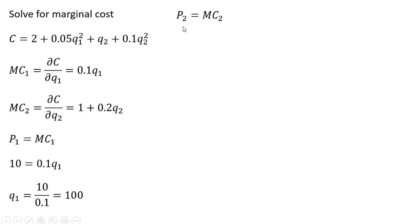And the profit maximizing condition for Good 2. Setting the price of Good 2, which is $15, equal to the marginal cost. And solving for Good 2. We're going to first subtract 1 from both sides, so 15 minus 1 leaves us 14. And then dividing through by 0.2, 14 divided by 0.2 gives us 70.